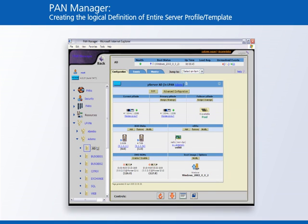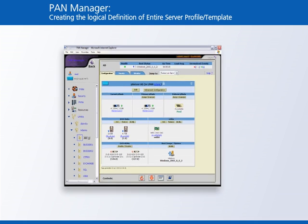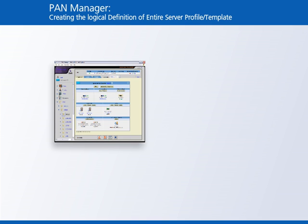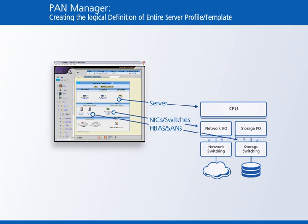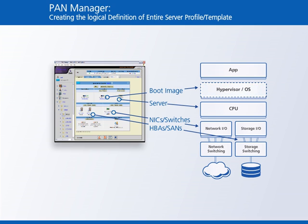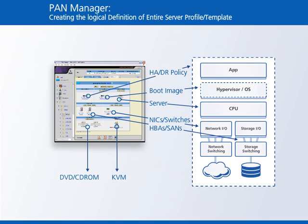Using eGenerapen PanManager, you can define and instantiate an entire server infrastructure profile using a single GUI. With a few mouse clicks, you can define the server I.O. and network switching, the storage I.O. and switching, server boot images, local DVD, CD-ROM and KVM connections, and an entire HA/DR failover policy for the full profile.